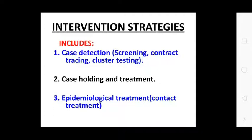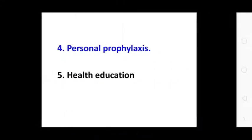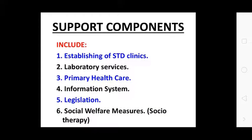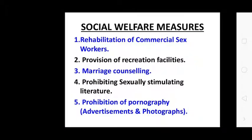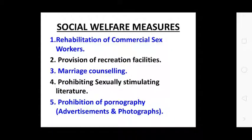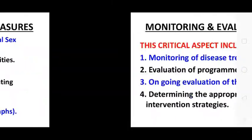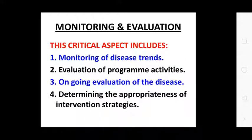Intervention studies include: case detection, screening, contact tracing, cluster testing, case holding and treatment, epidemiological treatment, contact treatment, persons prophylaxis, and health education. Support components include: establishing STD clinics, laboratory services, primary health care, information system, legislation, social welfare measures, and social therapy. Social welfare measures include rehabilitation of commercial sex workers, provision of recreation facilities, marriage counselling, and prohibiting sexually stimulating literature. Monitoring and evaluation: these critical aspects include monitoring disease trends, evaluation of program activity, ongoing evaluation of the disease, and determining the efficiency of intervention strategies. This topic is complete.